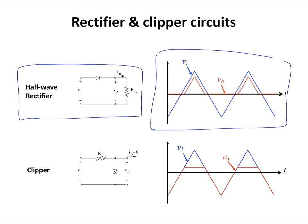Clipper circuits in terms of structure or circuit configuration are similar to half wave rectifier circuits, but the key difference is that the output in a clipper circuit is taken from the two ends of the diode. In a half wave rectifier, the output is taken from the two terminals of the load resistor. We are going to analyze the operation of the clipper circuit, find its transfer function, and draw the output for a sample input signal as shown in this figure.